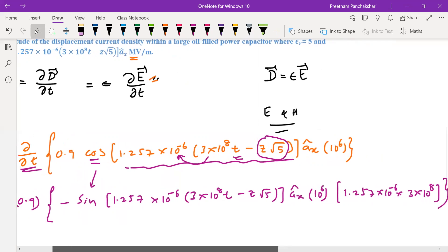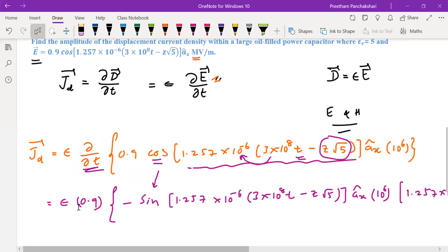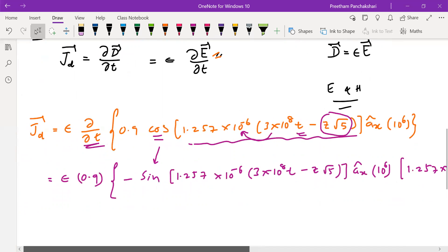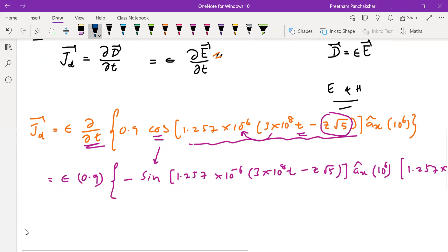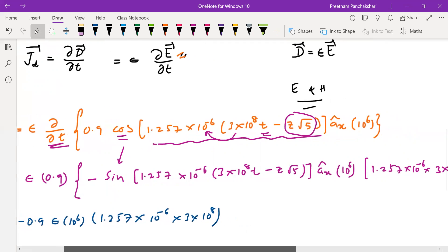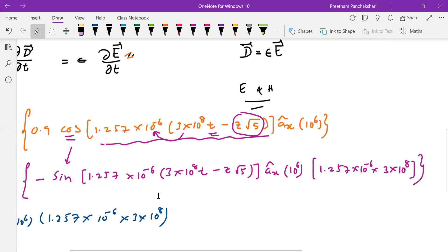Now we shall rewrite the equation taking all amplitude values to the front. So Jd equals 0.9 into ε, let us take minus to the amplitude, 10⁶ into the 1.257×10⁻⁶ into 3×10⁸. So this is the constant value we took from the end, this value is taken to the front, so everything is taken.